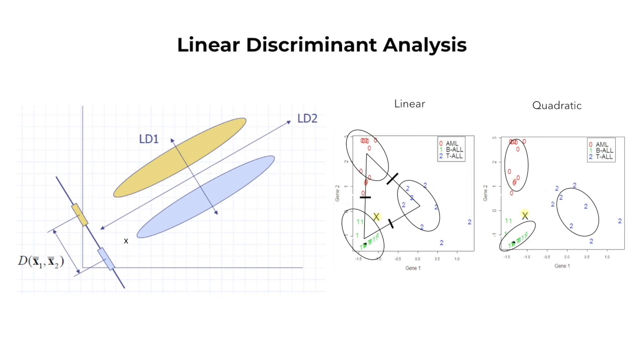LDA is also closely related to principal component analysis, which is also called PCA, as well as factor regression analysis, in that they both look for the linear combinations of variables which best explain the data. By contrast, PCA does not take into account any of the differences in class, and factor analysis builds the feature combinations based on differences, rather than the similarities. What's important to remember here is that LDA assumes that the data is normally distributed within each class, so preparing the data before running the analysis is going to be essential.